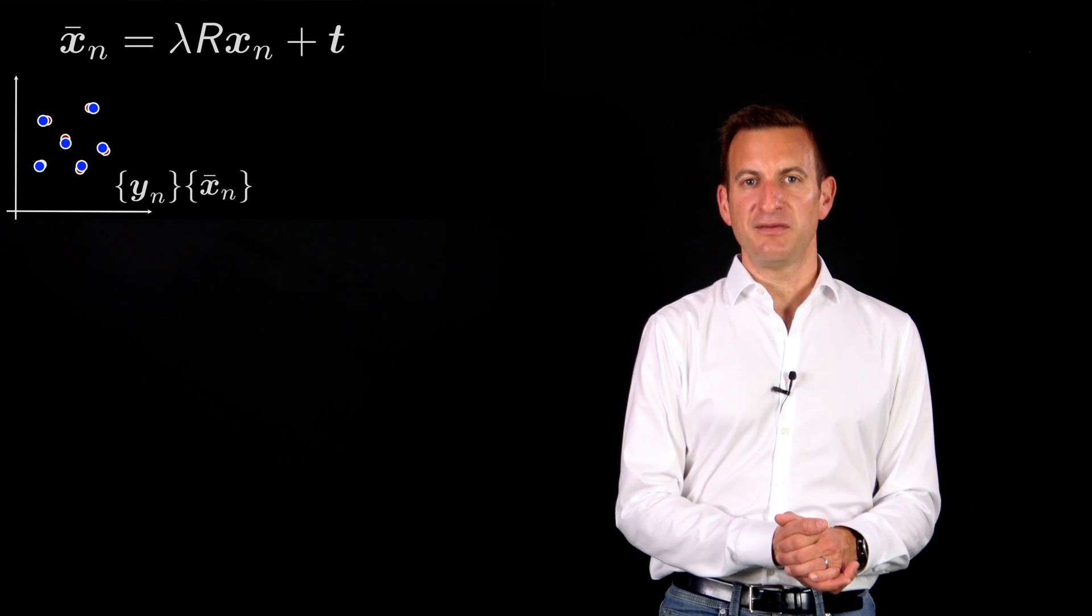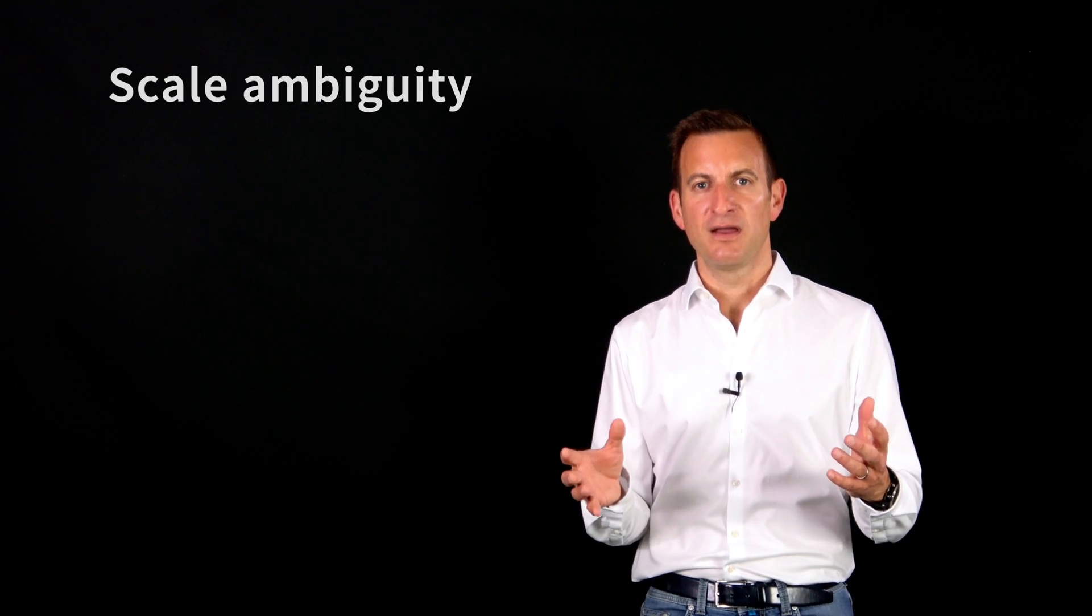So this becomes pretty important if you, for example, have a camera, you move around your camera and build a local map of the environment. Then this is typically a 3D point set which is only defined up to a scale parameter because you don't know the scale.